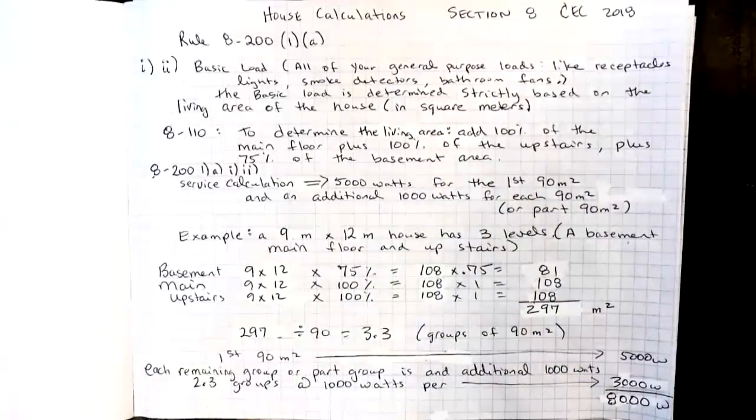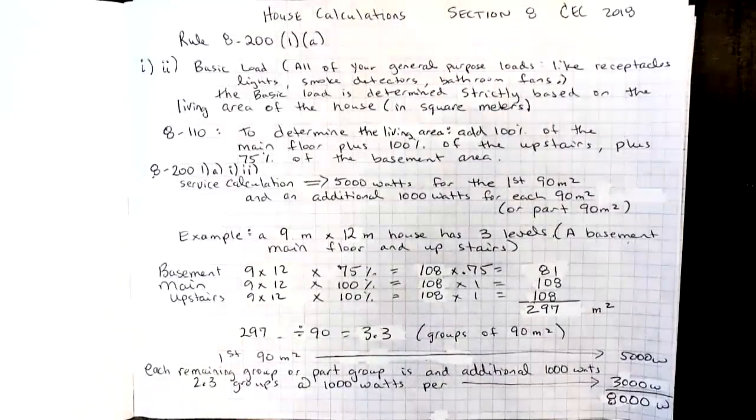All right, we're going to look at some house calculations out of Section 8 of the Canadian Electrical Code 2018 edition. This is Rule 8-200. There are a bunch of parts to it and I'm going to do each part as a separate video.